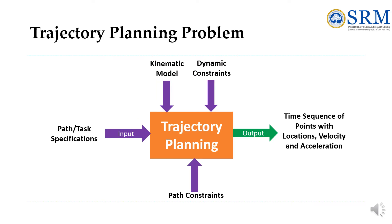The trajectory planning problem can be stated as: convert a specified Cartesian space trajectory into appropriate joint position reference values. The input is the Cartesian space path with path constraints including velocity and acceleration limits, as well as singularity analysis. The output is a series of joint position or velocity reference values to send to the controller.